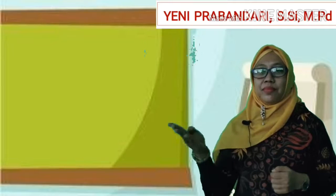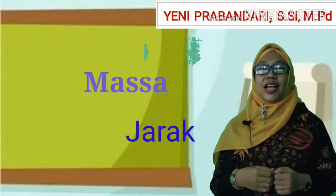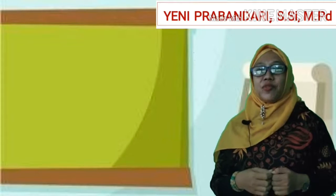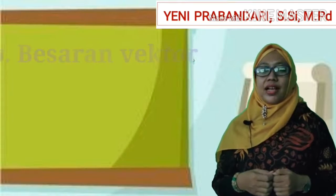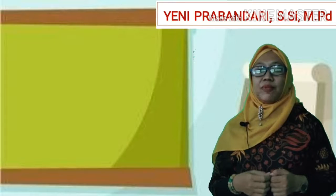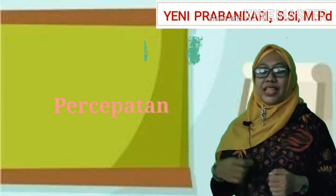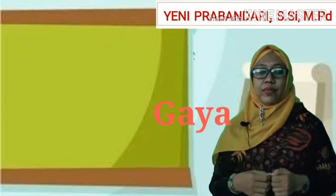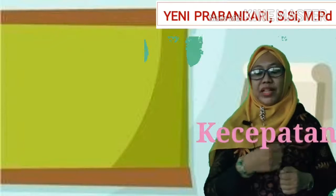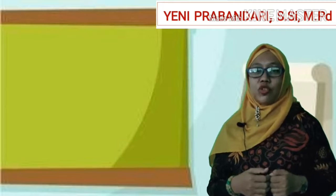Contohnya ada massa, ada jarak, ada panjang. Kemudian yang kedua adalah besaran vektor. Besaran vektor ini memiliki nilai atau angka dan memiliki arah. Contohnya misalnya adalah perpindahan, lalu ada gaya, lalu ada kecepatan, dan masih banyak lagi contoh yang termasuk ke dalam besaran vektor.